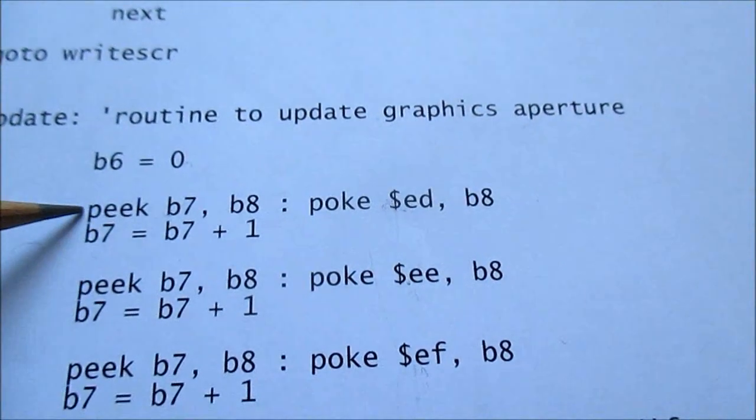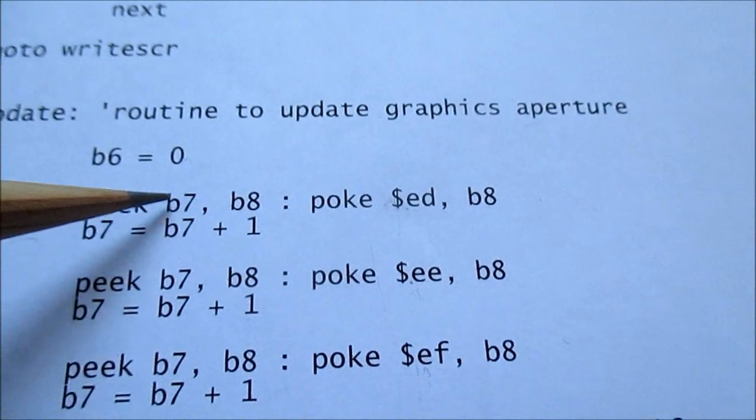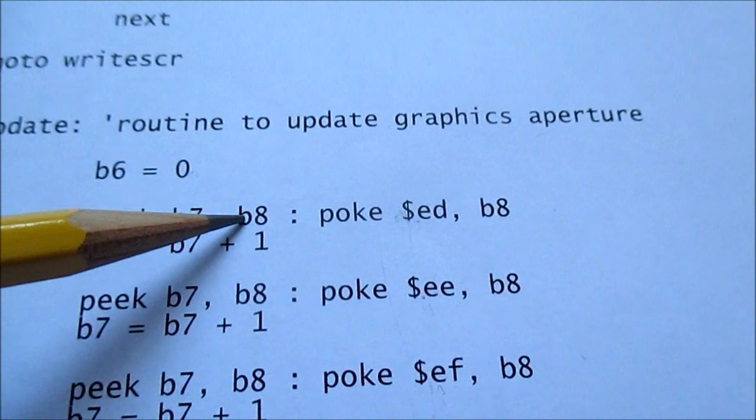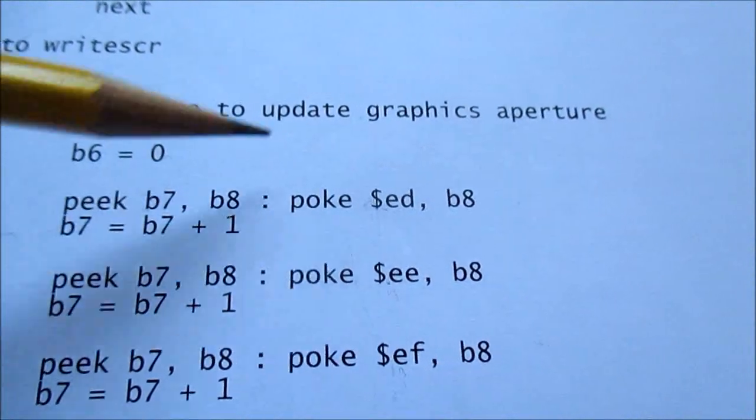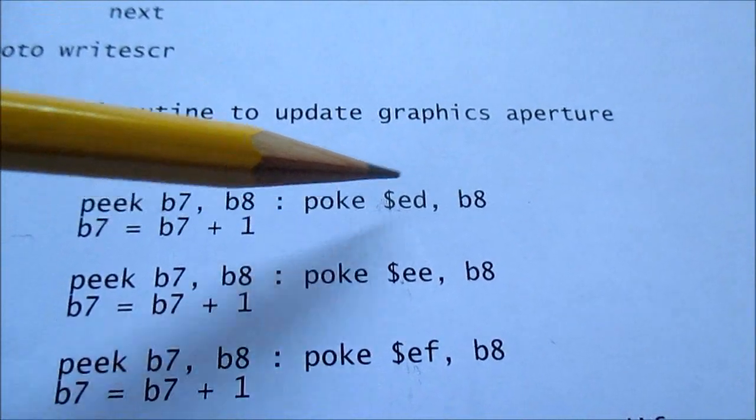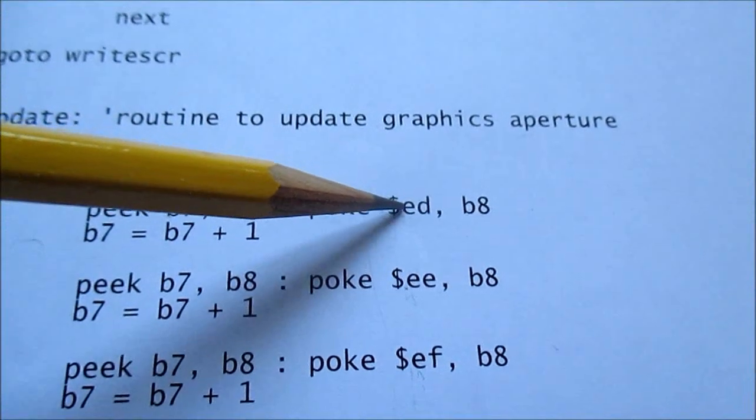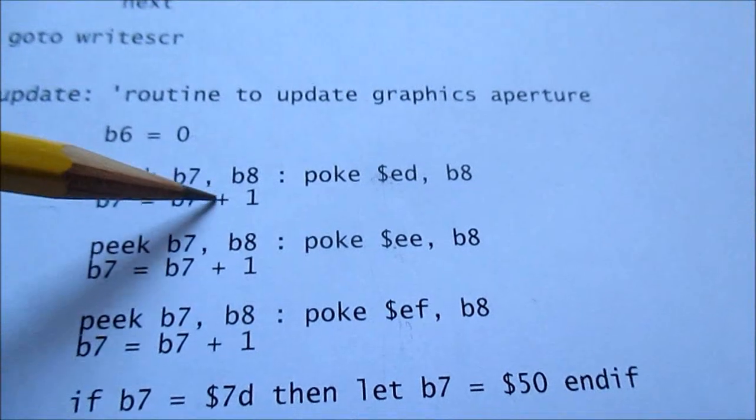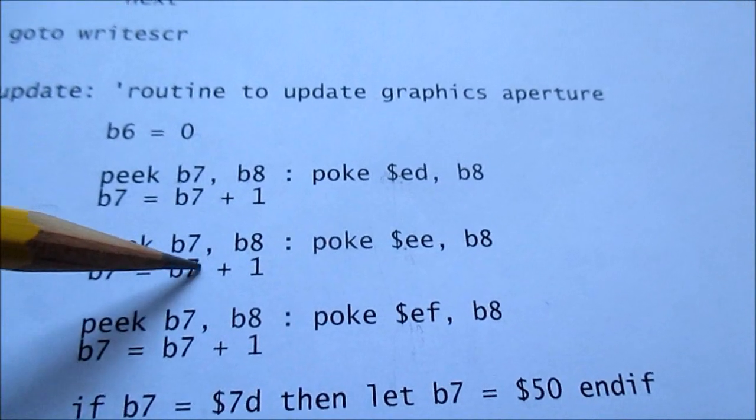So what I'm doing, I'm putting the contents of B7 into this variable B8, and then I take that and stick it in the graphics aperture location. That's the first column.